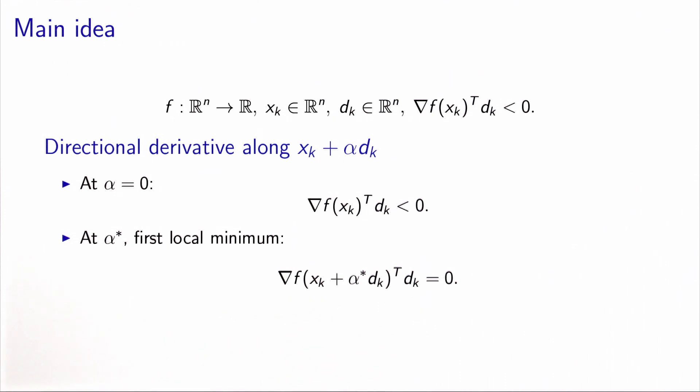So it means that when you proceed along dk, you start with a negative value and at some point you will reach a null value. It means that the directional derivative increases as you proceed along dk. And when we reach alpha star, the increase of the directional derivative is exactly equal to the absolute value of the inner product of the gradient and dk.